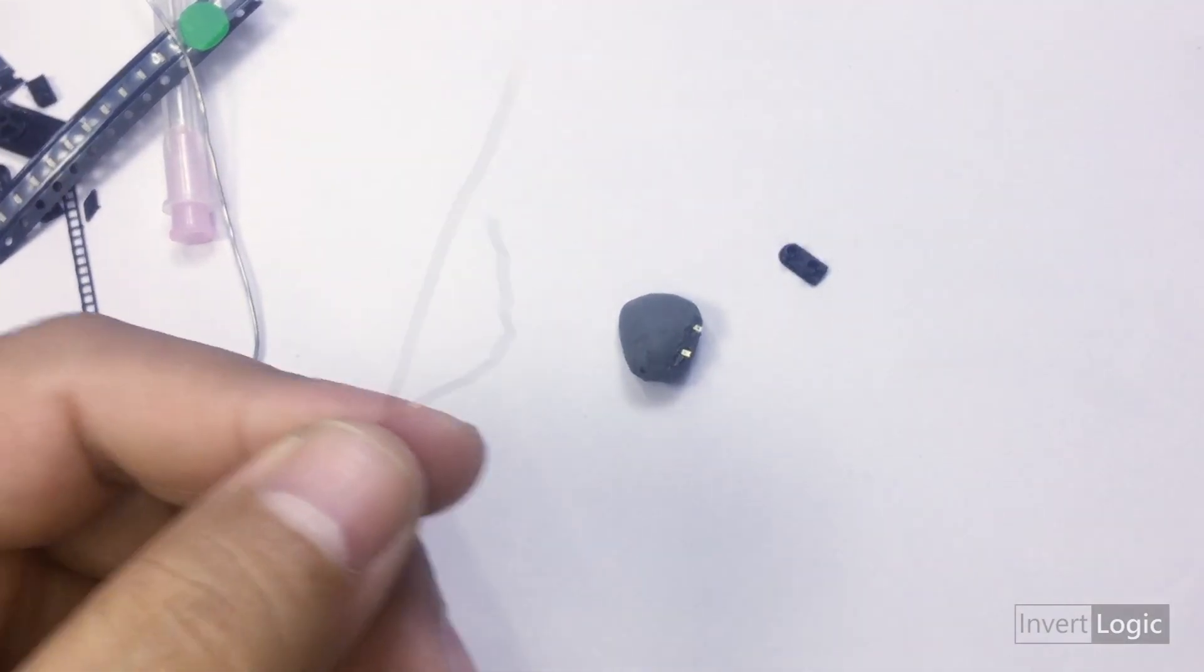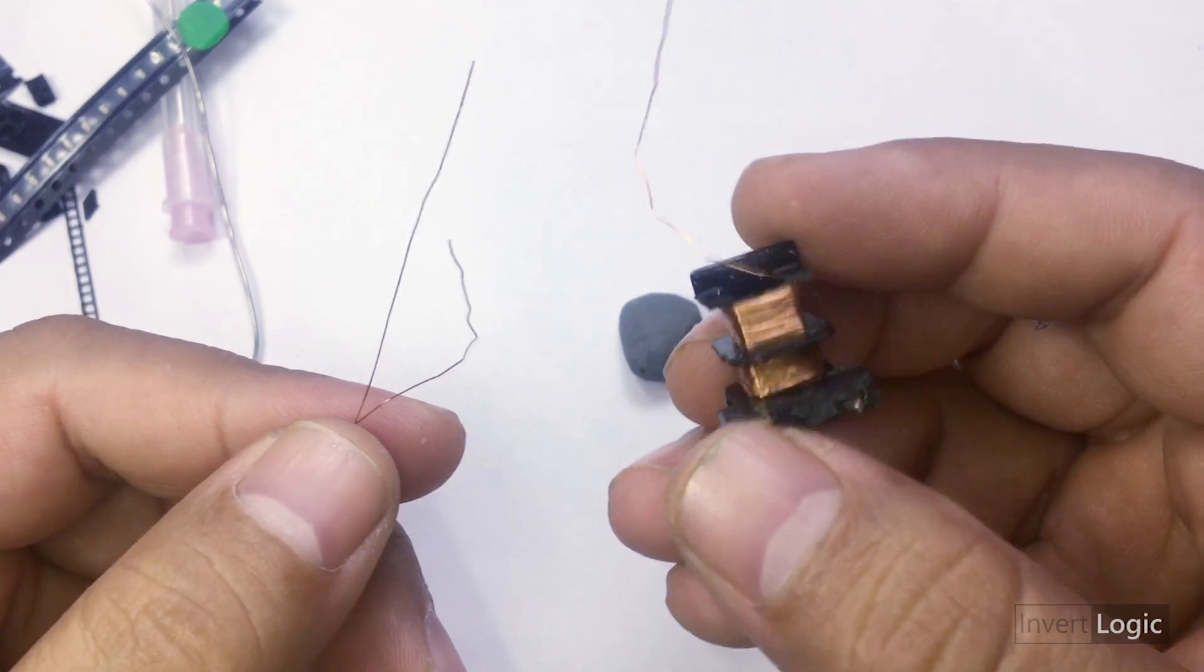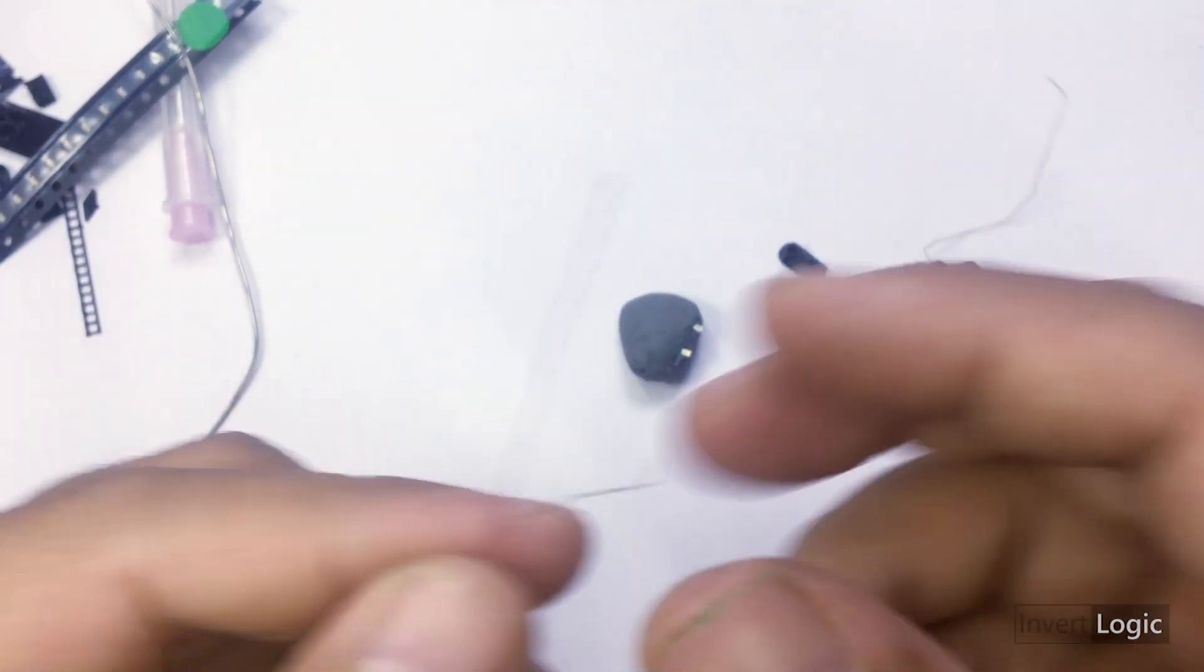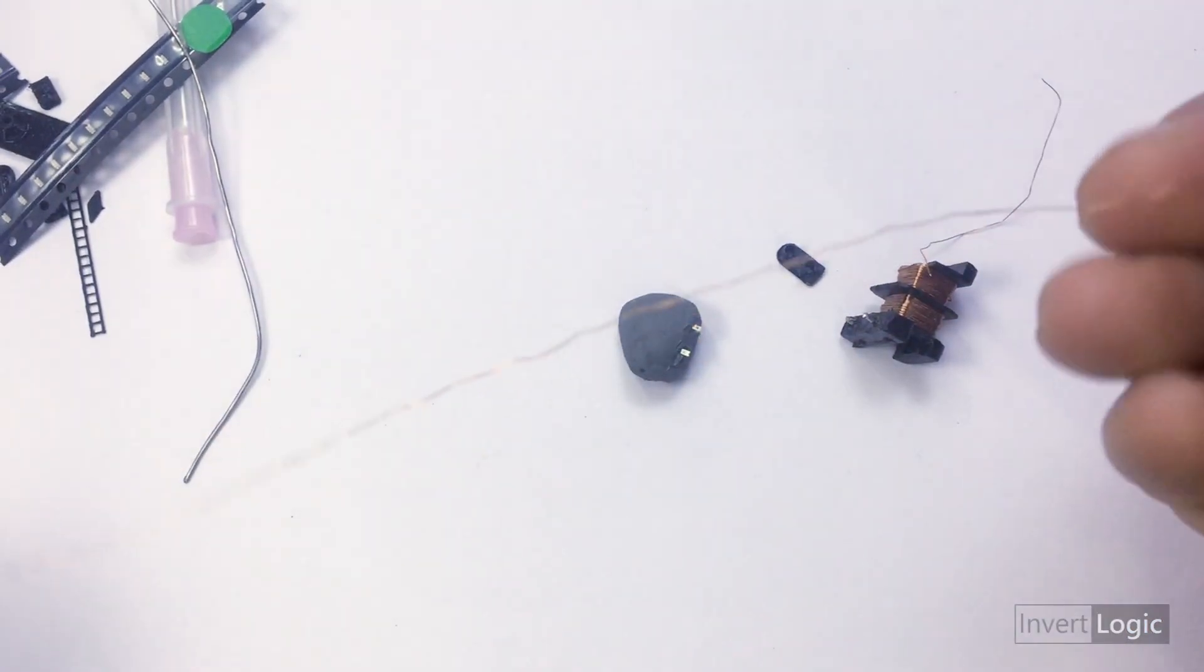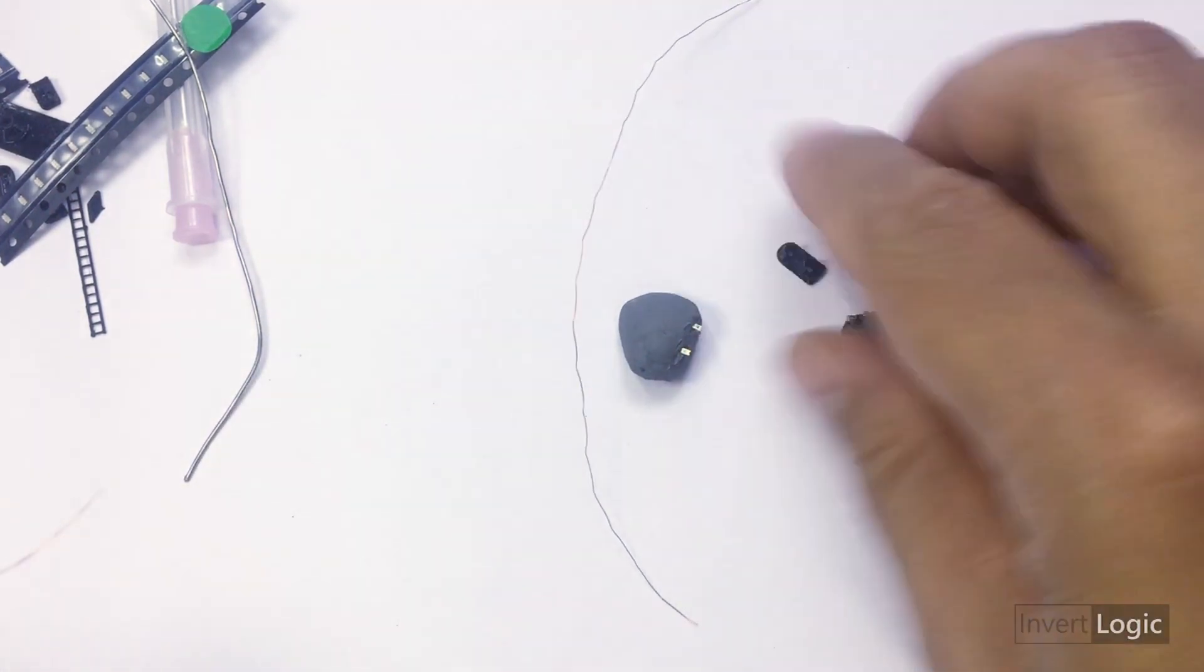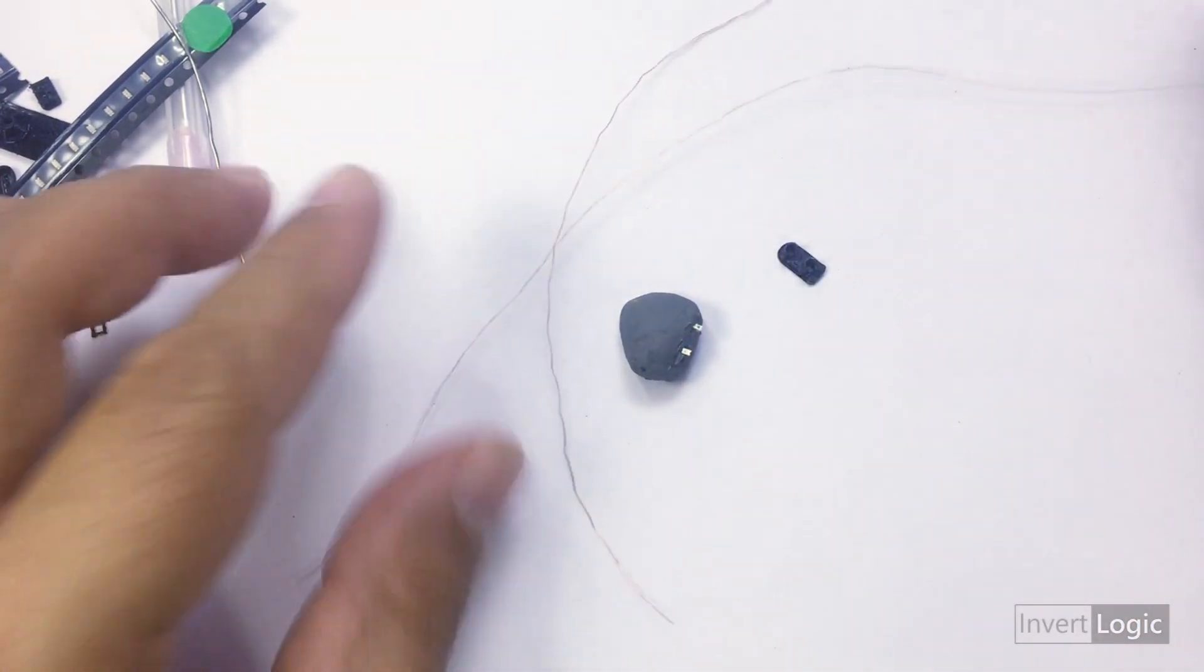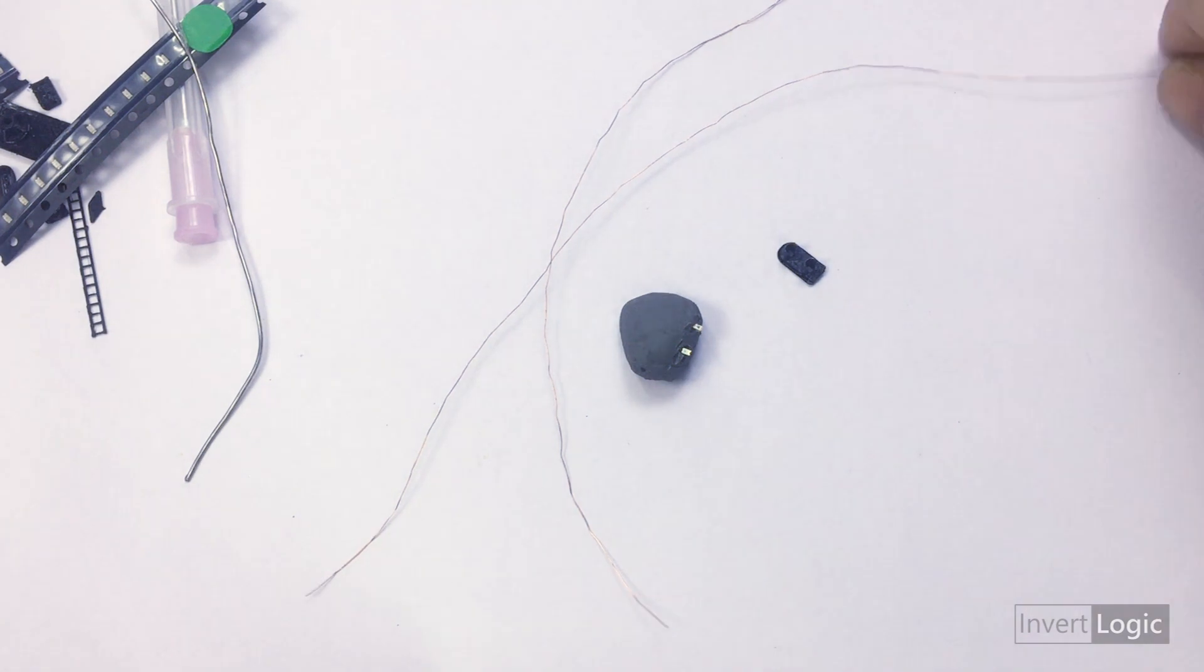Now take the enamel wire from any transformers - very small tiny transformers you will find in power supplies. This must be a thinner wire because it needs to go through the injection.